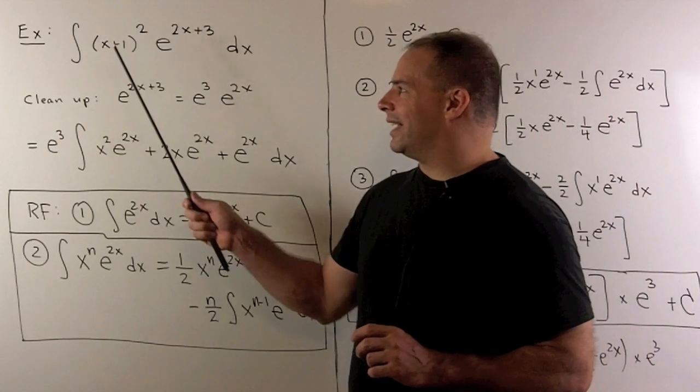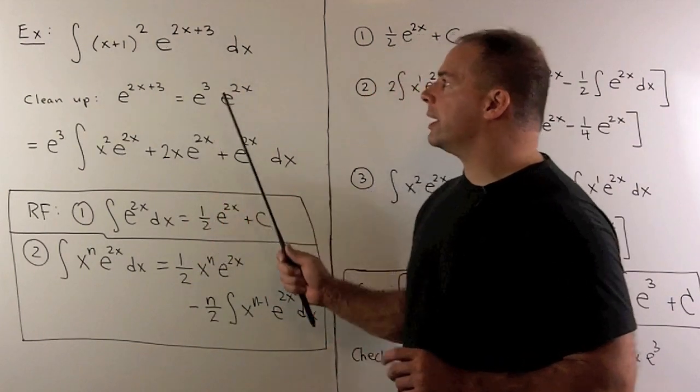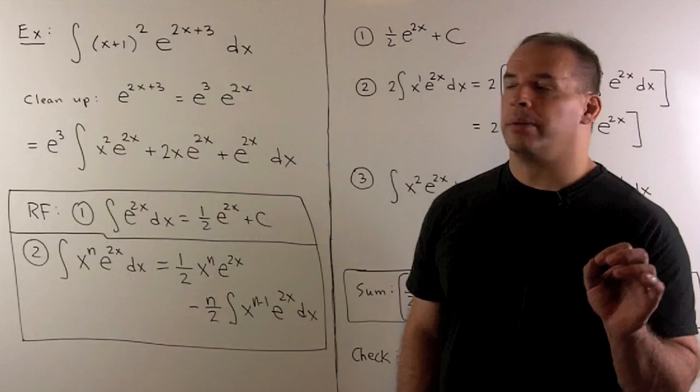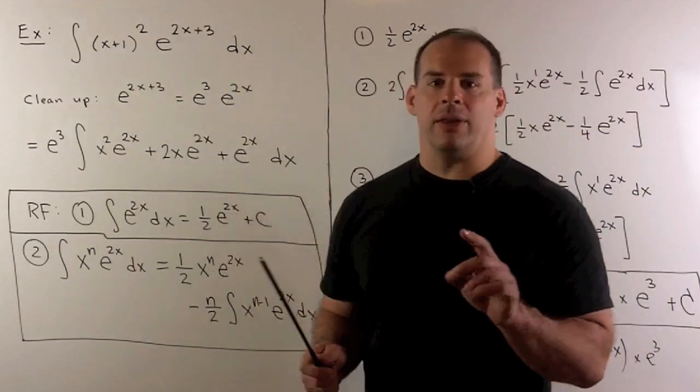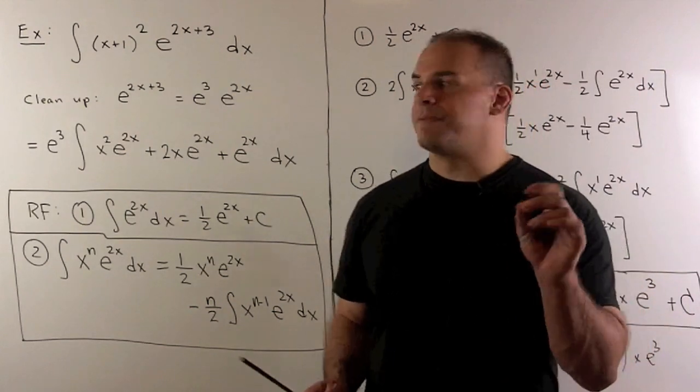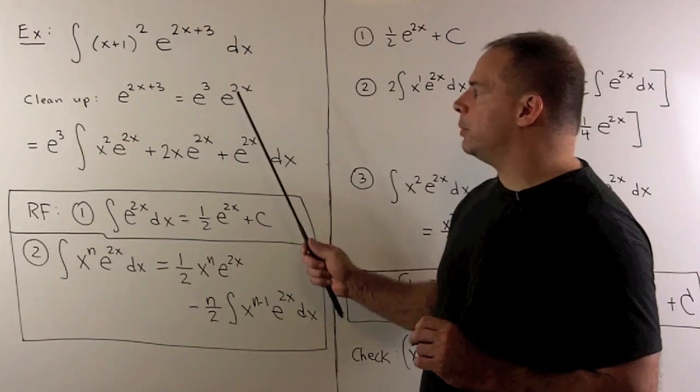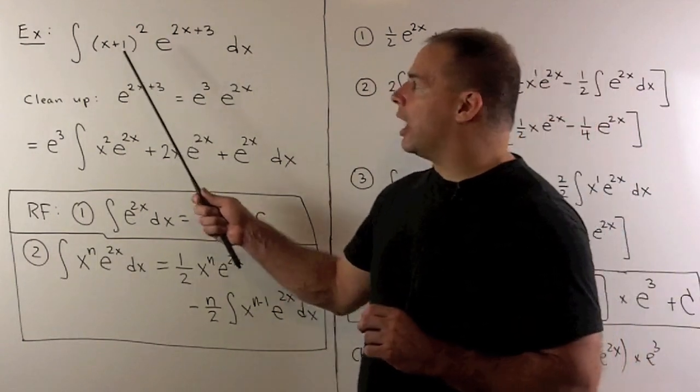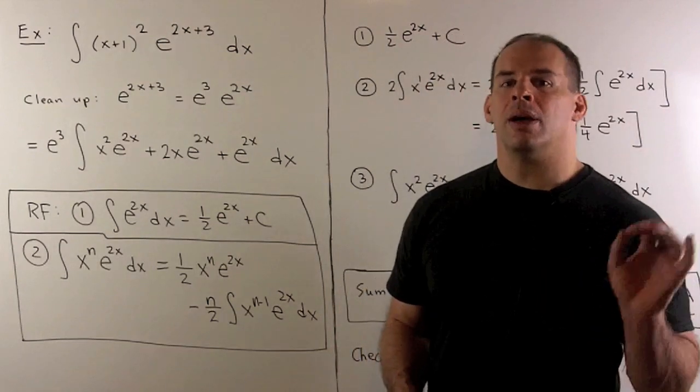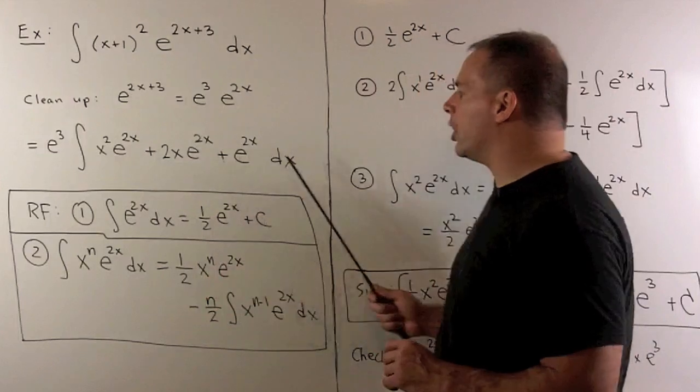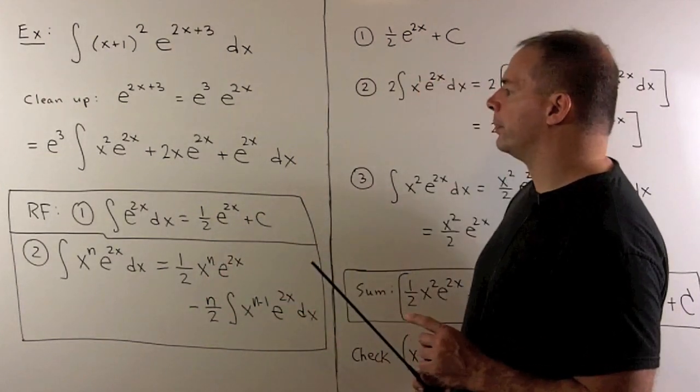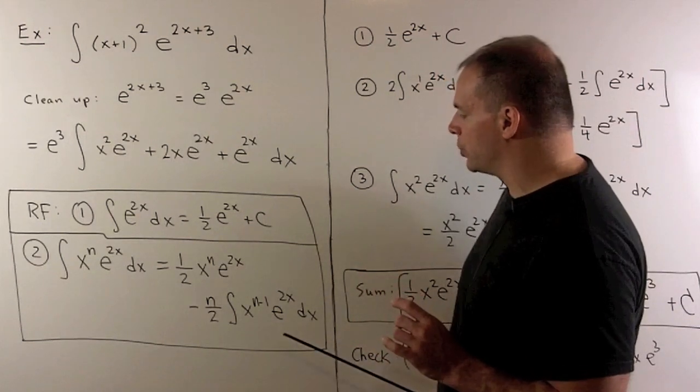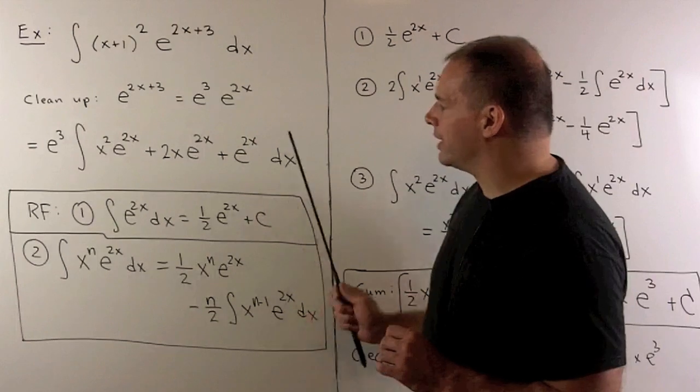For an example, let's consider the indefinite integral x plus 1 squared e to the 2x plus 3 with respect to x. Now, before we can apply our reduction formula, we need to clean up our integrand. So, these terms don't look like anything that our reduction formula applies to. First, e to the 2x plus 3 we can rewrite as e cubed times e to the 2x. We'll pull the e cubed out in front until we get to the very end. Then, I'll expand the x plus 1 squared to get x squared plus 2x plus 1. Multiply that through e to the 2x. We get three terms, each one that our formulas apply to. Now, for our formulas, we're going to have a equals 2. So, we'll write our formulas out with that substitution.